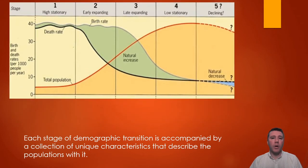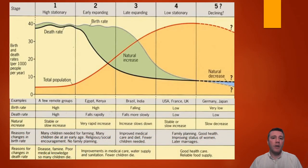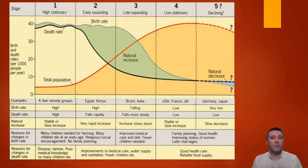In stage one, both birth rates and death rates are relatively high, which keeps the population size low. Because of early improvements in health care and sanitation, societies in stage two experience a decrease in the death rate. But because the birth rate remains high — since children are an economic advantage — population size increases rapidly.